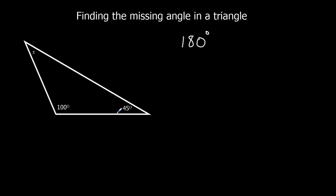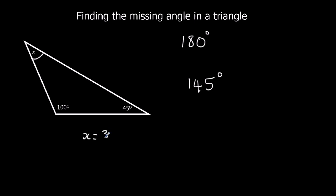We already know two angles: we've got 100 and we've got 45, so so far we've got 145 degrees. What we need to do to work out the missing angle is do 180 take away what we've got. So 180 take away 145 is 35 degrees. So this angle x is equal to 35 degrees.